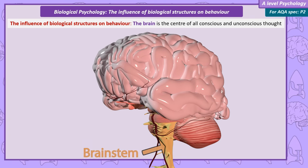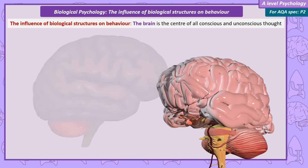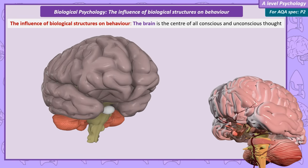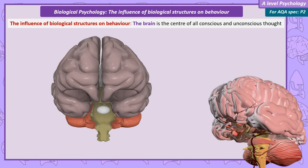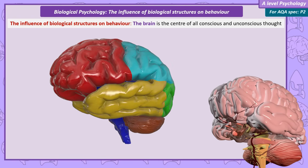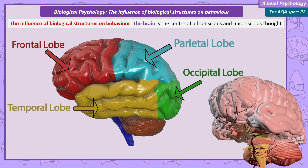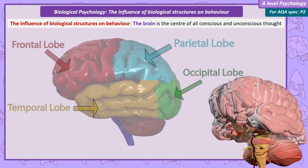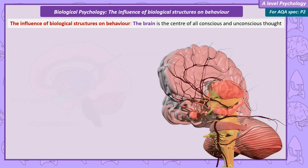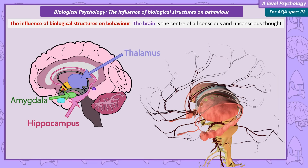Above the brain stem is a structure called the cerebellum. The rest of the brain is called the cerebrum. It has two hemispheres connected by a bundle of nerve fibres called the corpus callosum. Each hemisphere is subdivided into four lobes: occipital, temporal, parietal and frontal. Deeper in the brain is an area called the limbic system, including structures called the amygdala, the thalamus and the hippocampus.